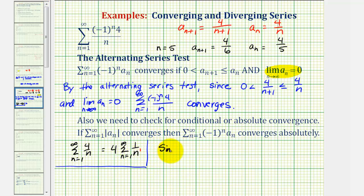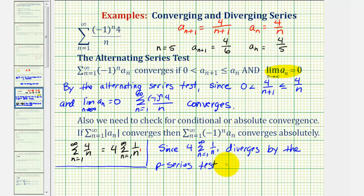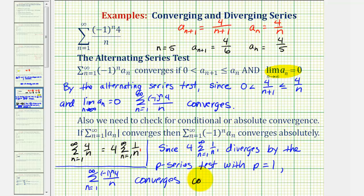Since four times the infinite series where a sub n is one divided by n to the first diverges by the p-series test with p equal to one, the original alternating series converges conditionally, not absolutely. It is important to remember that when we have an alternating series, we do have to check for conditional or absolute convergence. I hope you found this helpful.